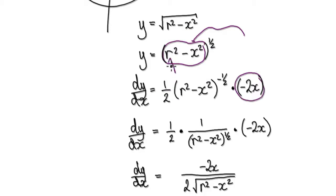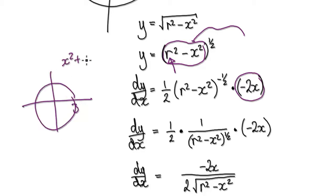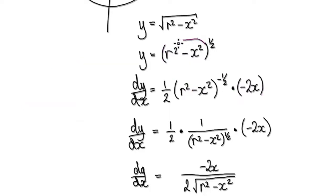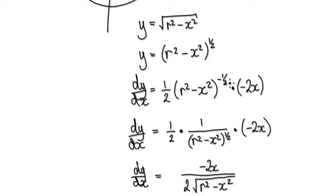Remember, r is just a constant — it's the radius of the circle. For example, radius three, so the equation would be x squared plus y squared equals nine. This r squared is just a number, just like the number nine — it's just a constant. So when you differentiate the bubble, this constant disappears. Then the two comes down, so it's negative a half, the x stays the same, and then the power gets minused by one, which will be one. So that will give you this.